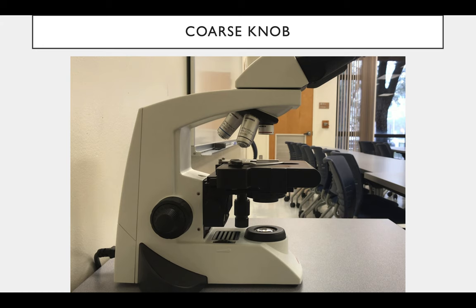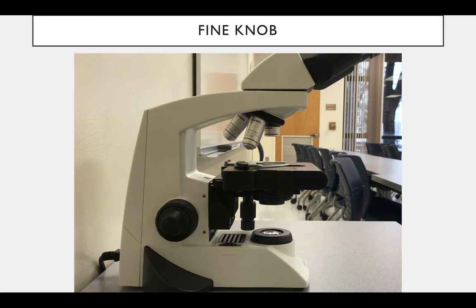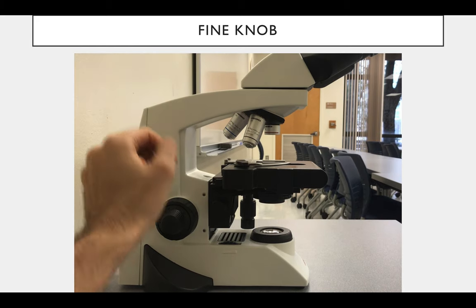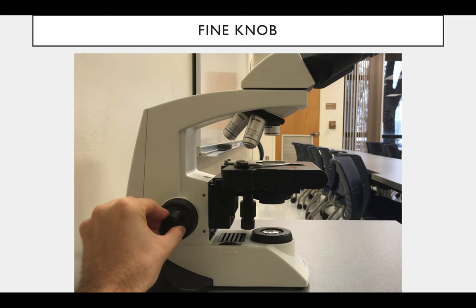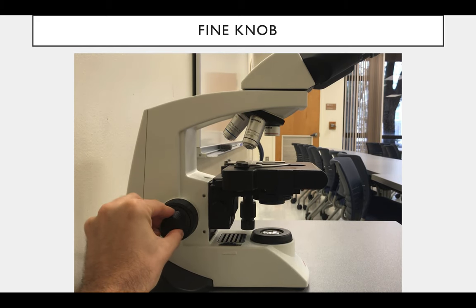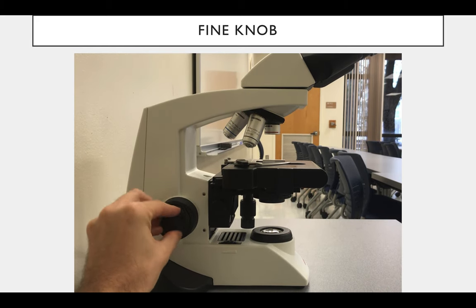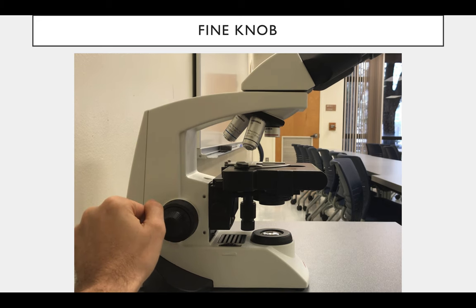With the other lenses, you have a risk of hitting the lens and cracking it, so you'd only use the coarse knob with the 4x objective lens. What do you use with the other lenses? You use the fine knob — that's the one sticking out right there. It still moves the stage up and down, but subtly, precisely, slowly.